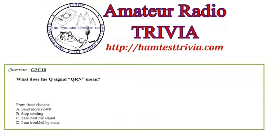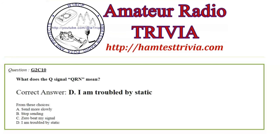Question 10: What does the Q signal QRN mean? Choices: A) Send more slowly, B) Stop sending, C) Zero beat my signal, D) I am troubled by static. QRN is natural noise — it means you are troubled by static. QRM, as in Mary, means you're being interfered with.